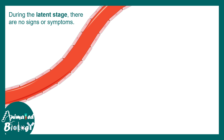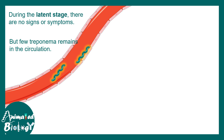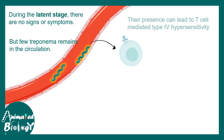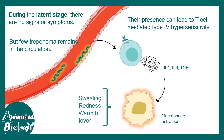After the secondary stage, there is a latent period when the infection shows no signs or symptoms. The bacteria remain in circulation but show no pathological symptoms, leading people to mistakenly believe the infection has resolved — but this is a latent stage, not a cured stage. Their presence can lead to T-cell mediated type 4 hypersensitivity, secretion of interleukins like IL-1 and TNF-alpha, and macrophage activation, sometimes causing mild redness, fever, or warmth.